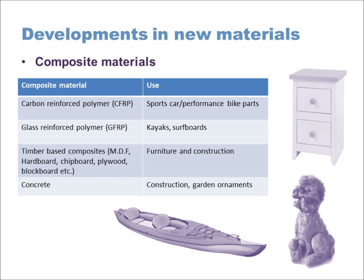CFRP and GFRP are very strong and hard, and they also allow very complex and curved shapes to be formed — making them ideal for sports car bodies, performance bike parts, kayaks, and surfboards where you need a strong, hard surface while maintaining lightness. Carbon fiber is generally seen as slightly stronger but more expensive than GFRP, which is why it's more exclusive to sports cars and expensive bike parts. GFRP is slightly lower in strength but cheaper to use.